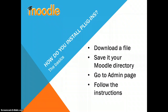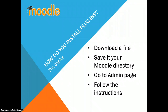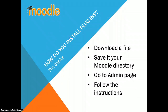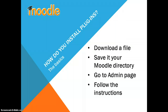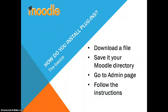So how do you install plugins? To put it simply, you just download a file, save it to your Moodle directory on the server Moodle is on, go to the admin page, and follow the instructions. Now that is very basic — some plugins may be more difficult or time-consuming depending on the actual plugin, but that is basically how to do it.